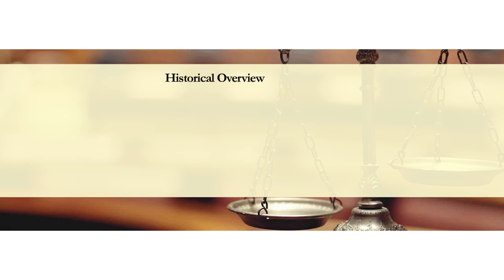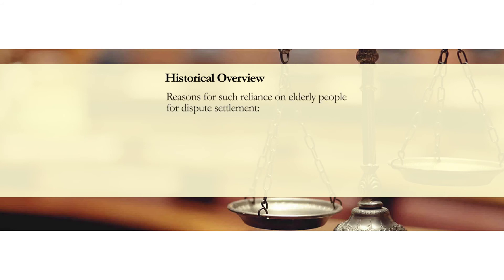Another mode of informal access to justice was village elderly men. From time immemorial, a few elderly village men who were widely respected in the society were called upon to convene a meeting near a religious place — usually a raised platform of a temple or a mosque, or at some other public place — in order to bring about an amicable settlement of disputes existing between the parties. The reason for referring disputes to such elderly people was their acquaintance with the community people and the parties involved.